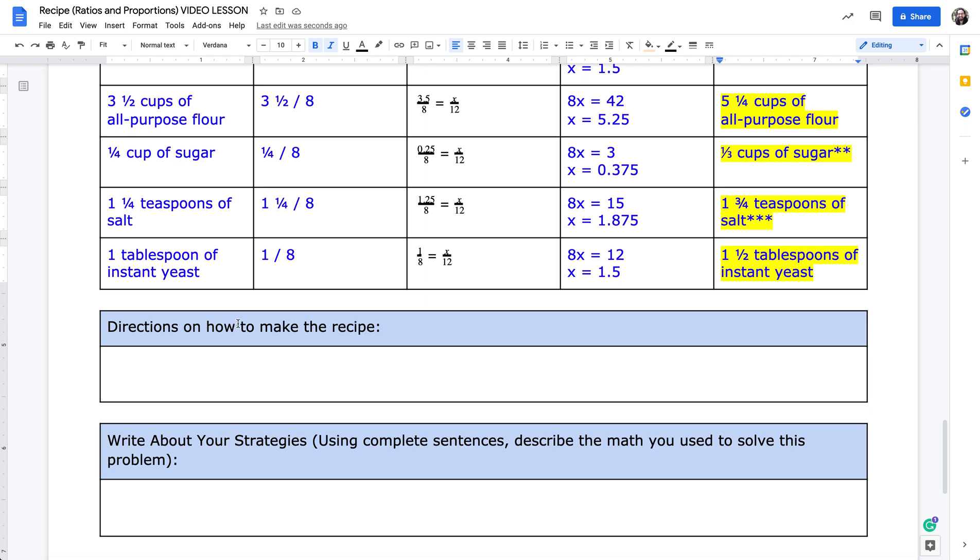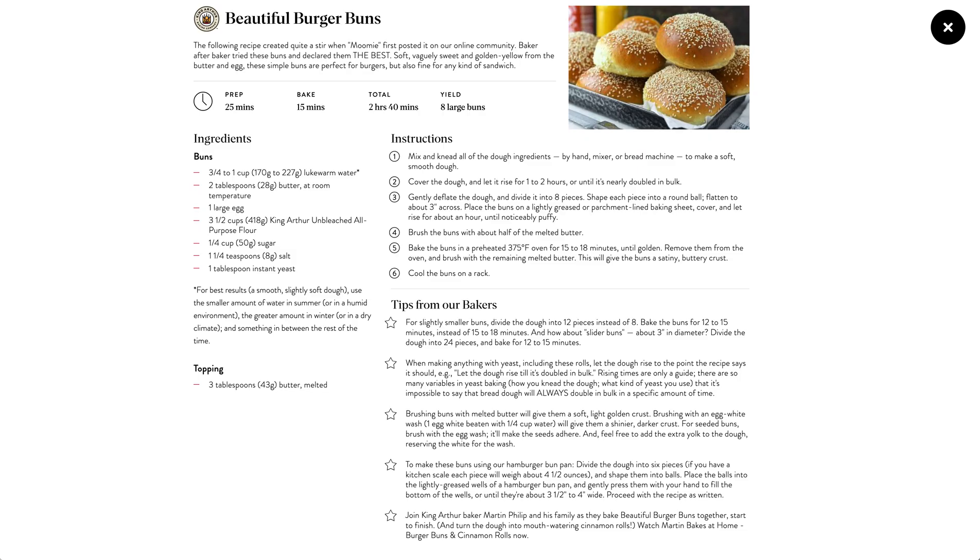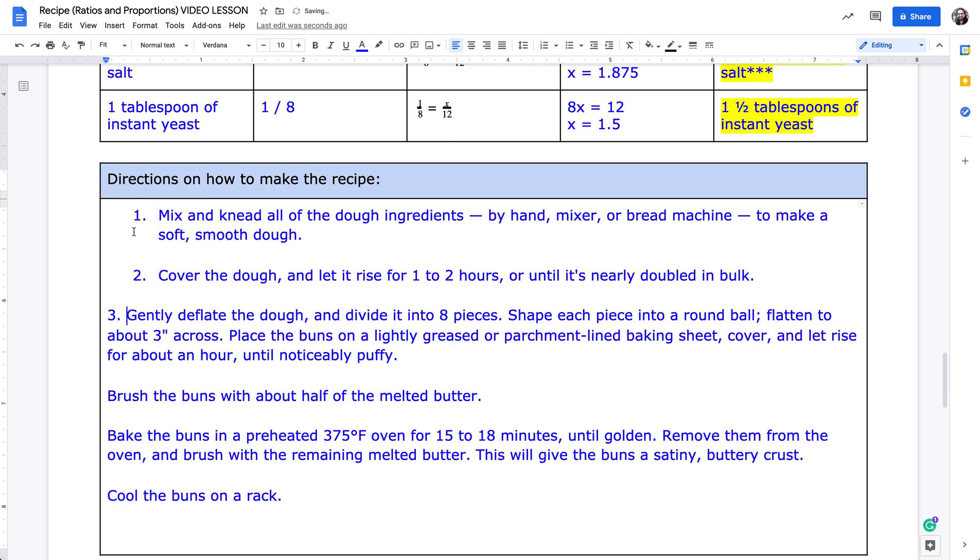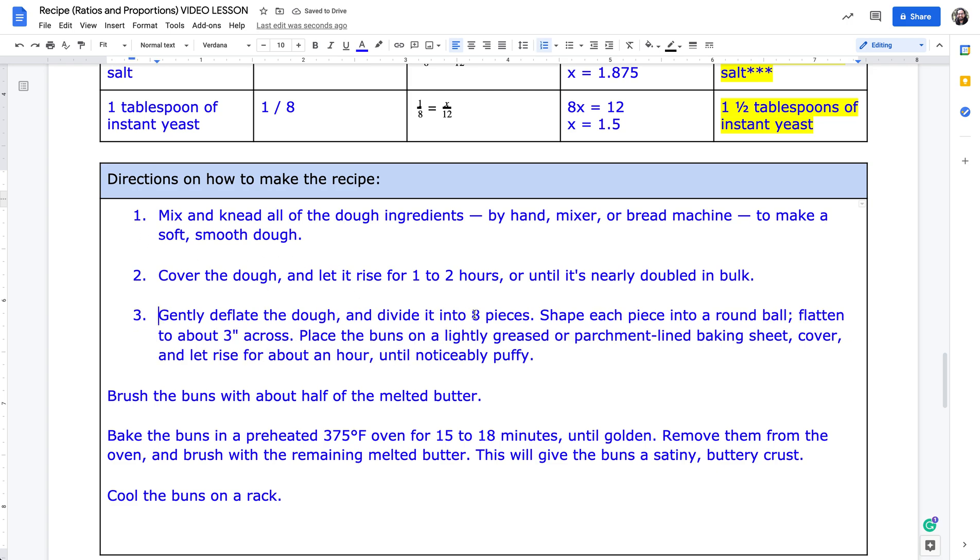You're ready to type the directions on how to make the recipe. In my case, I'm taking the instructions from my recipe, I'm copying them, heading on back, and pasting them here. Now I can number them off. The first one is step one, followed by step two, step three. Now in step three, when I read through this, I realize that it says divide into eight pieces. However, in my adjusted recipe, this is for 12, so I need to change that to a 12. Be sure to look through the instructions, and if you need to adjust anything based on your new adjusted recipe, make those changes.